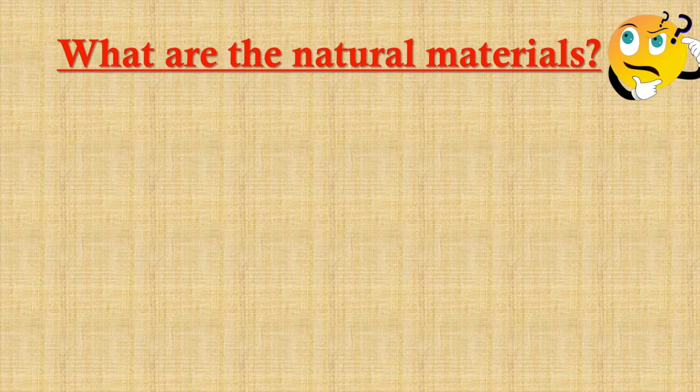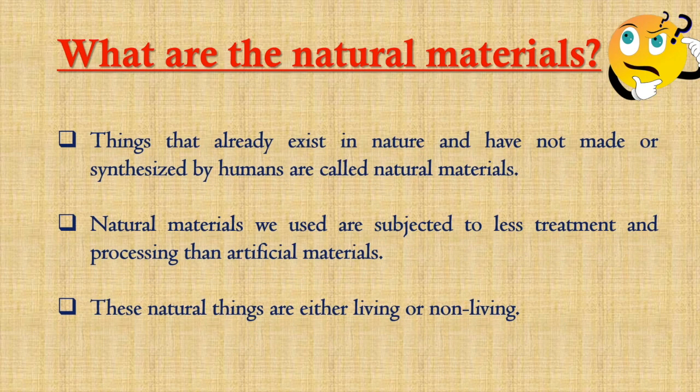What are natural materials? Things that already exist in nature and have not been made or synthesized by humans are called natural materials. Natural materials we use are subjected to less treatment and processing than artificial materials.